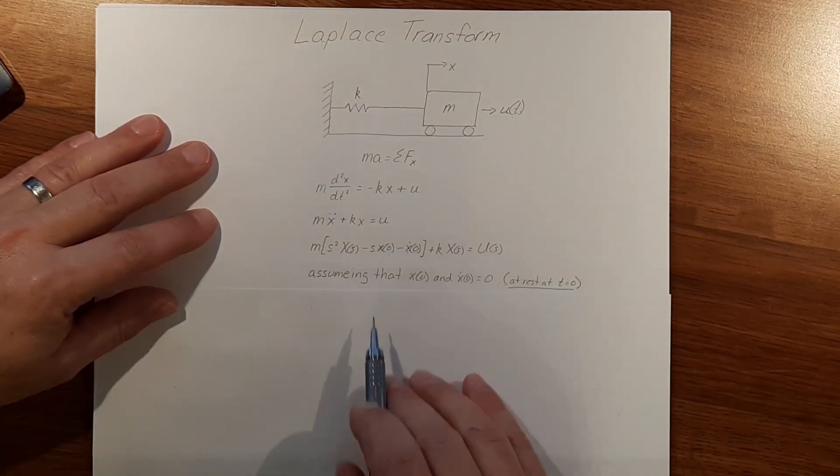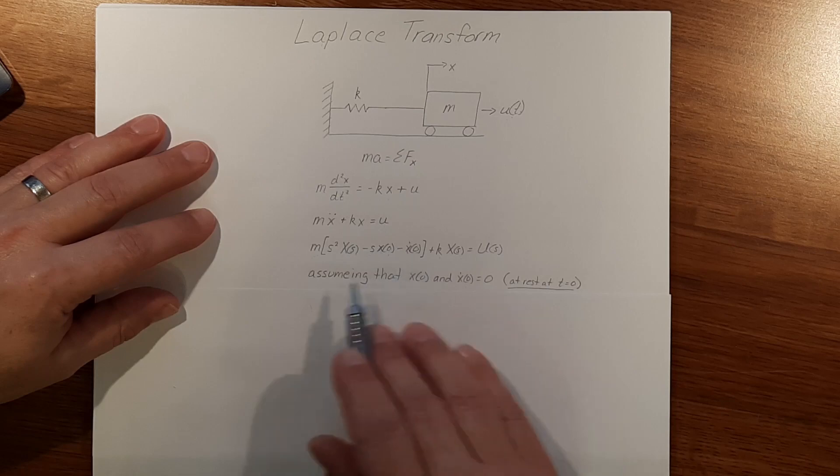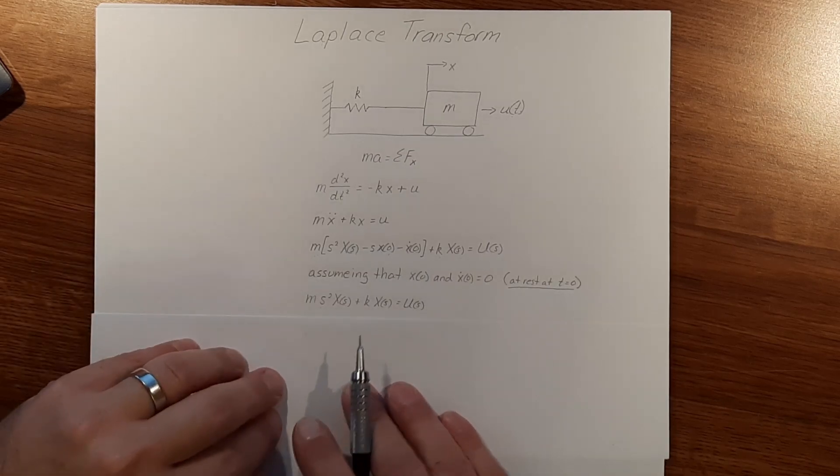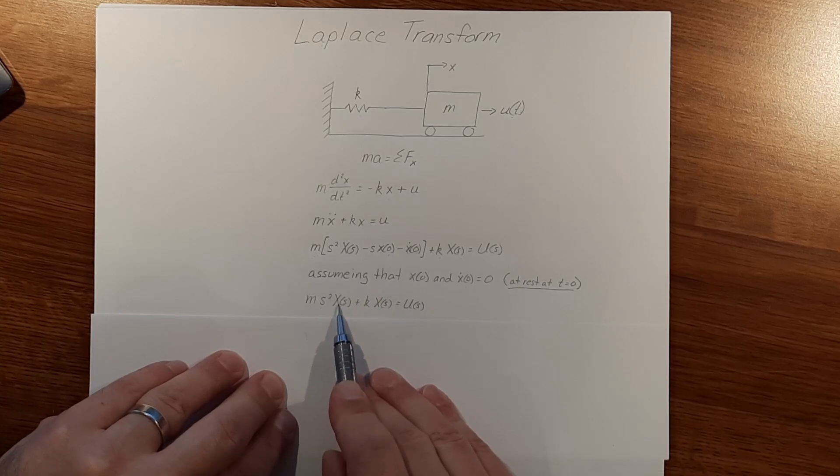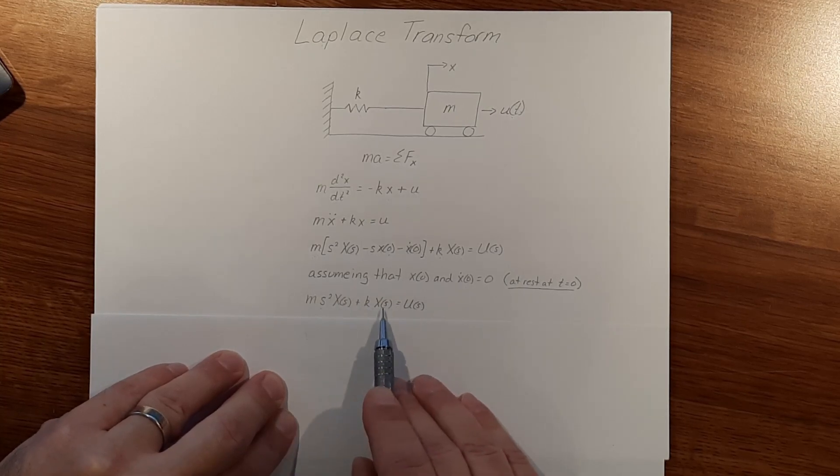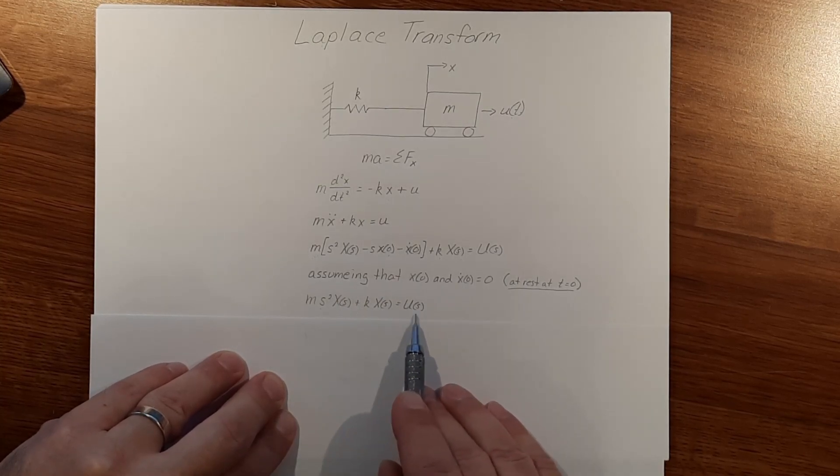Knowing that, we can drop out these two terms and rewrite this equation as m times s squared times big X of s plus k big X of s equals U of s.